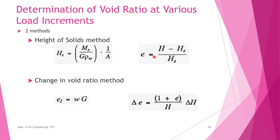For the height of solids method, remember this formula: Hs = Ms / (G × ρw × A), where Ms is the dry mass of the soil, G is the specific gravity, ρw is the density of water, and A is the cross-sectional area of the specimen. The void ratio E is then found using E = (H − Hs) / Hs, where H is the height of the specimen at that particular loading.